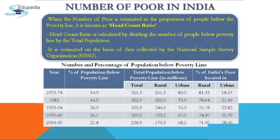In 1973-74, 321.3 million people were below the poverty line, and in 2004-05 this number came down to 238.5 million.